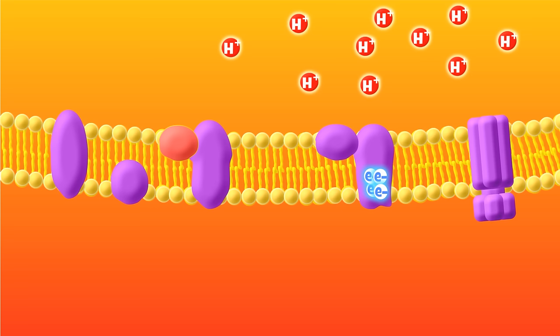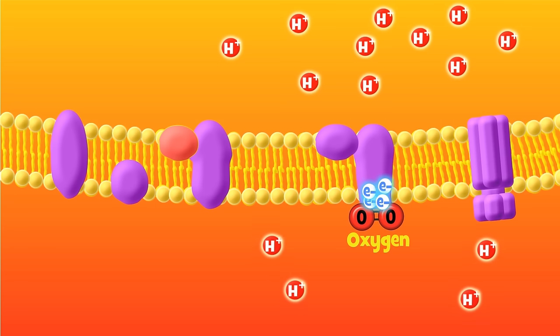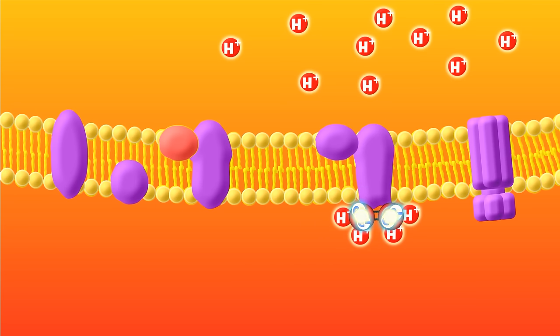Now the electrons need somewhere to go, a final destination to complete their journey. Fortunately, you breathe, and oxygen comes to the rescue. Oxygen accepts the electrons, as well as hydrogens from the matrix, making water.